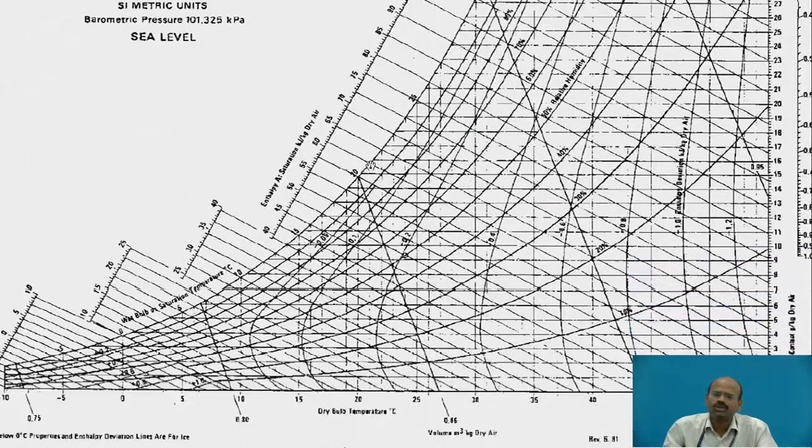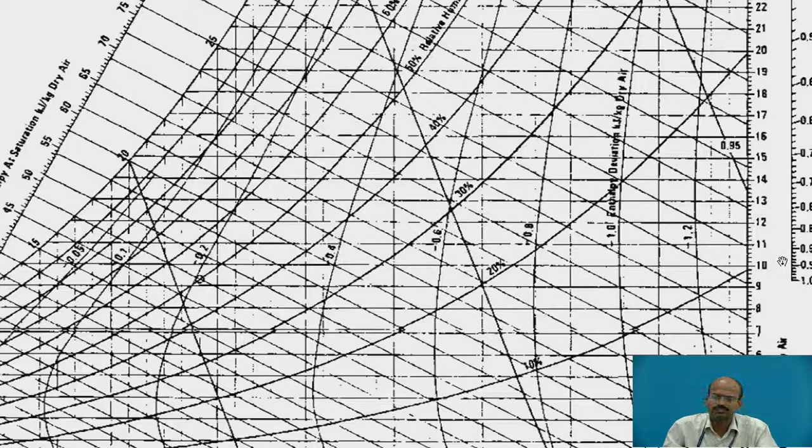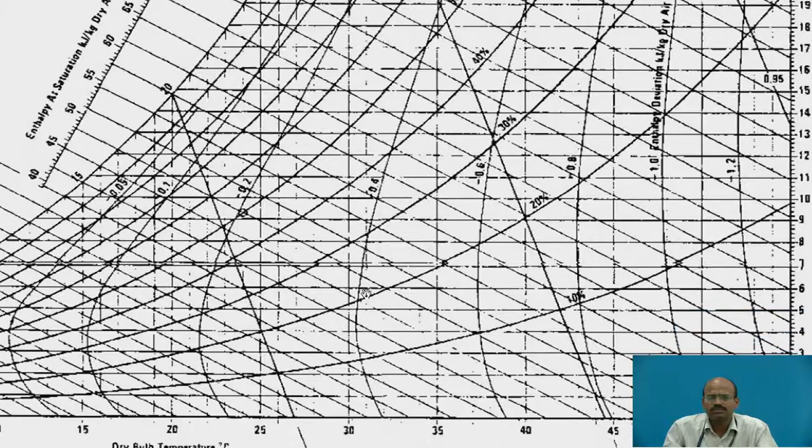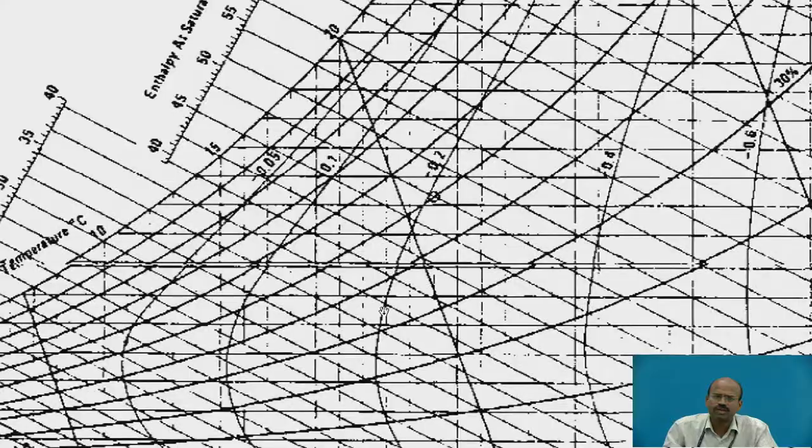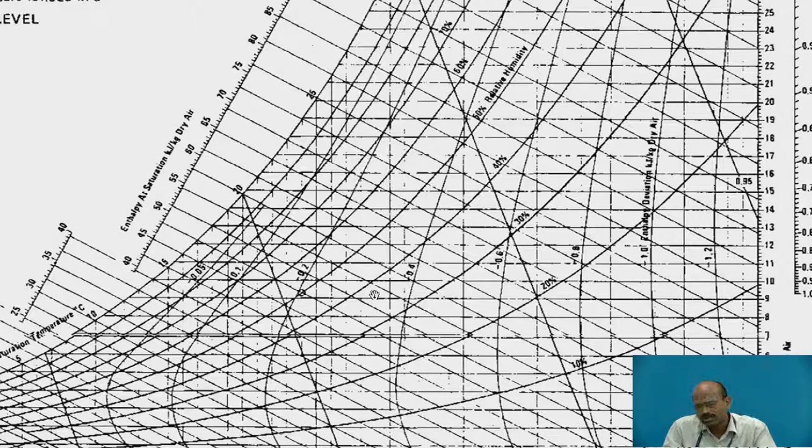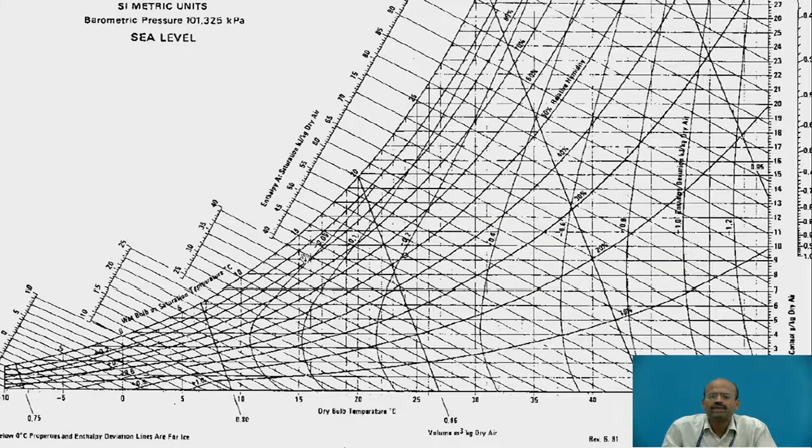Then, on this psychrometric chart, on right hand side, there is SHF scale. This is the sensible heat factor scale. It will start from 1 to 0.75. To draw this scale, there must be some reference point. On the carrier psychrometry chart, this circle is the reference circle. We have to align the set square to this reference circle and the obtained SHF value. Then, we can draw the sensible heat factor of that particular room load, because room load will have sensible heat and latent heat. Any inclined line will have some value of SHF as it consists of sensible heat and latent heat.